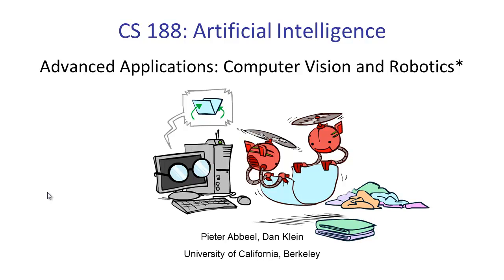Today we'll look at some applications of artificial intelligence in computer vision and robotics. We'll just touch on a couple of them to give you some idea of how the things we covered might be extended to something people are actually doing right now, either for real applications or what the state-of-the-art research is.